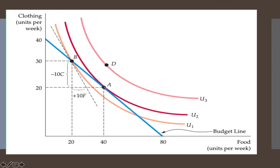This point implies that the consumer is willing to trade 1 unit of clothing for 2 units of food. The condition MRS = pF/pC = 1/2 holds at point A, confirming satisfaction is maximized there. In summary, in the theory of consumer satisfaction, if consumers are rational and maximizing, you can tell the value of each person's MRS by looking at the prices of the two goods.